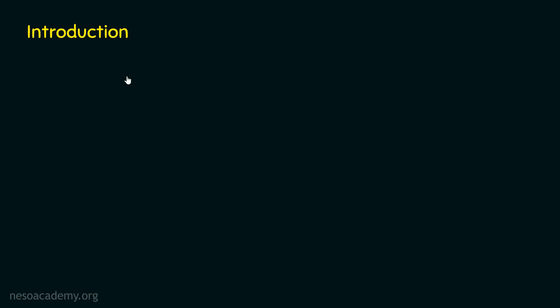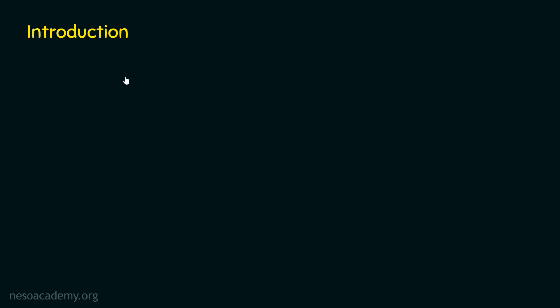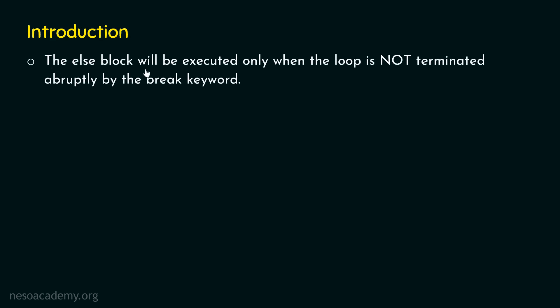We have already understood the working of else block with while loop. We learned that the else block will only be executed when the loop does not terminate abnormally because of the break keyword. The same thing applies to the for loop as well — the else block will be executed only when the loop is not terminated abruptly or abnormally by the break keyword.